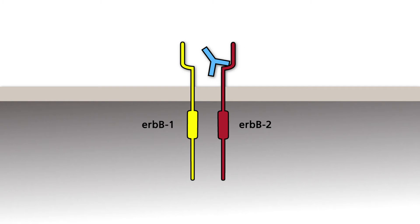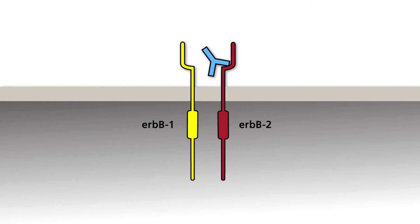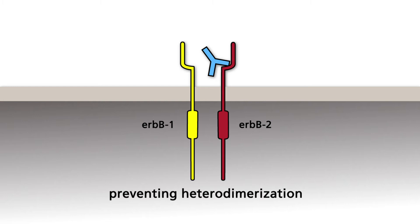The two monomers can no longer dimerize, regardless of whether a ligand such as EGF is present or not. Pertuzumab is active in tumor cells irrespective of the expression level of ERB-B2.